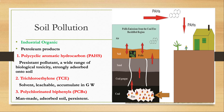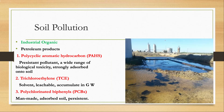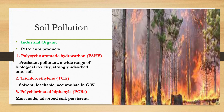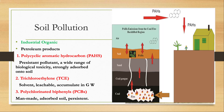Polycyclic aromatic hydrocarbons are emitted into the environment from volcanic eruptions, forest fires, and industries. They are transported by wind to different locations and deposited onto the soil, where they are strongly adsorbed on soil particles.